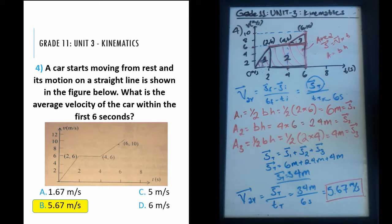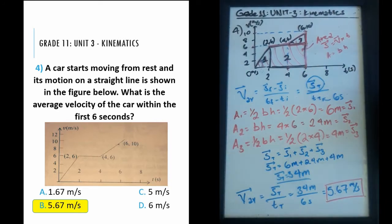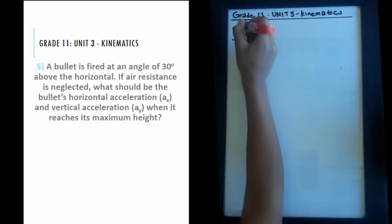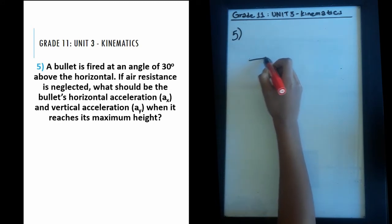This question could have asked us to find the acceleration in the first two seconds, or the displacement from the fourth to sixth second. All you need to know is that a velocity-time graph lets you find displacement and acceleration by reading between the lines. Now this is the fifth question in the series: a bullet is fired at an angle of 30 degrees above the horizontal. The main concept is projectile motion, so let's draw the projectile trajectory.